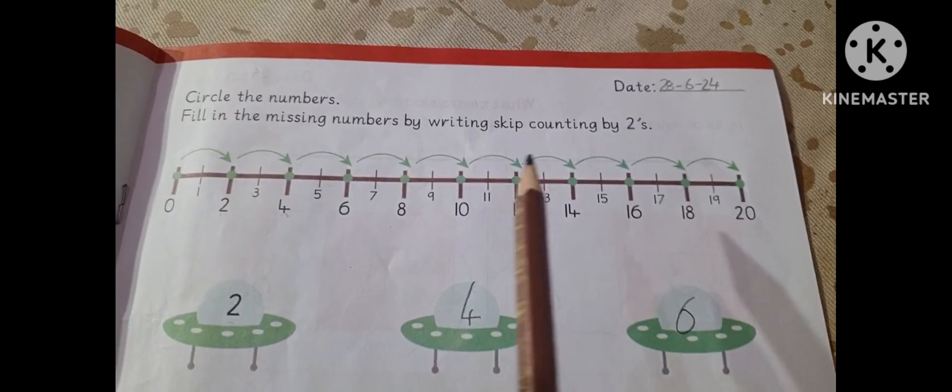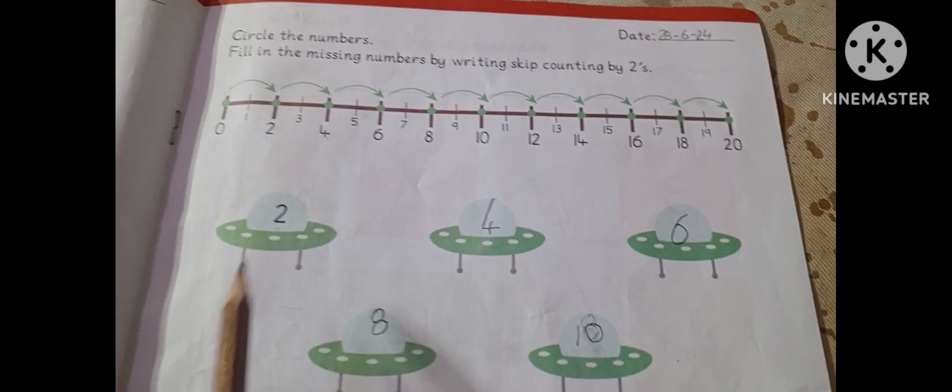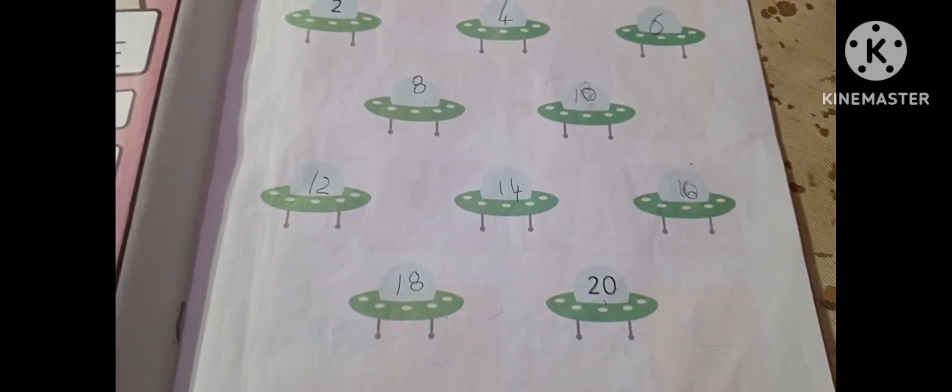Fill in the missing numbers by writing and skip. Skip counting by 2: 2, 4, 6, 8, 10, 12, 14, 16, 18 and 20.